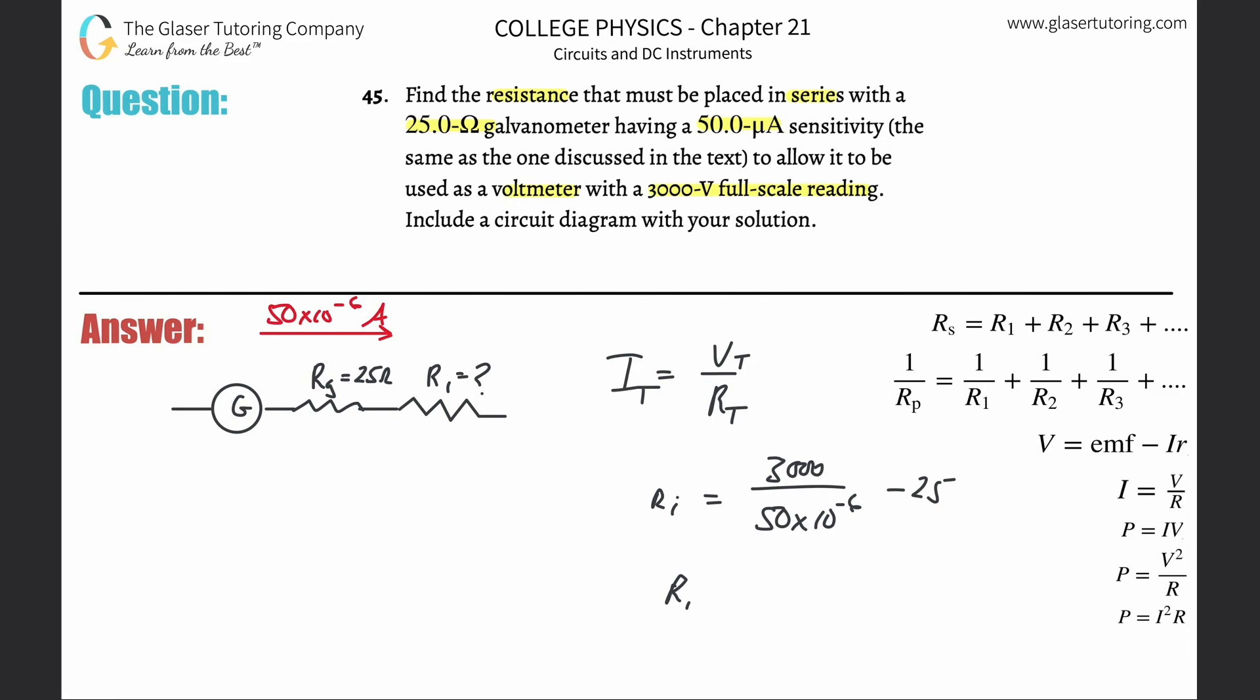So Ri is going to be 5.99. Considering rounding with sig figs, it's going to be 6 times 10 to the...